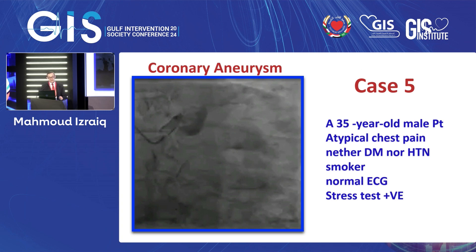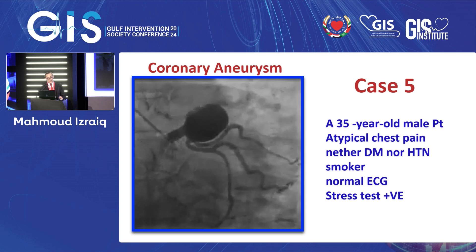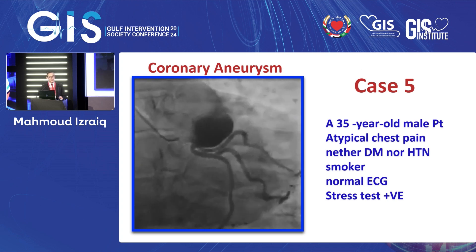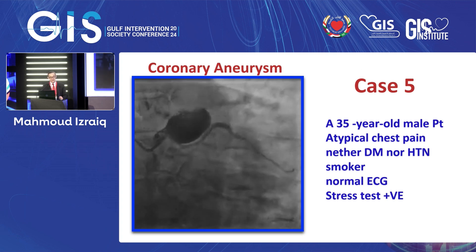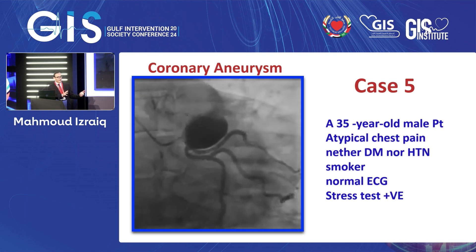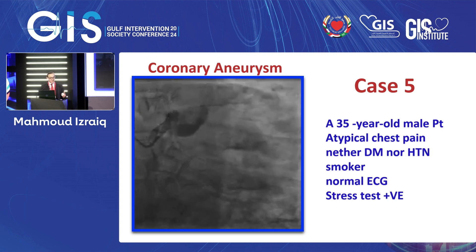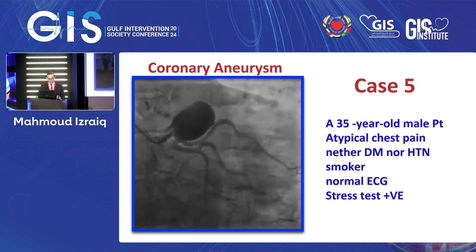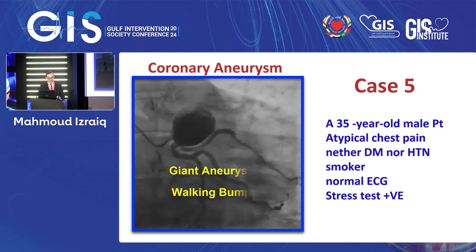This is a 35-year-old male with atypical chest pain, neither diabetic nor hypertensive, just a heavy smoker. You can see a very large aneurysm — aneurysm being part of ectasia. This is a large ectasia or large aneurysm, and this is also a surgical case.